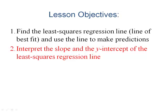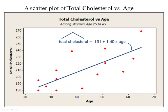In this video we'll talk about interpreting the slope and y-intercept of the regression line. We'll continue to refer to the age-cholesterol study used in previous videos — a dataset with the age and total cholesterol for 14 women aged 25 to 65. We fit a least squares regression model to that data, and in our last video we saw how to use the regression equation to predict total cholesterol given any woman's age between 25 and 65. In this video, we want to discuss the interpretation of the slope and intercept terms.